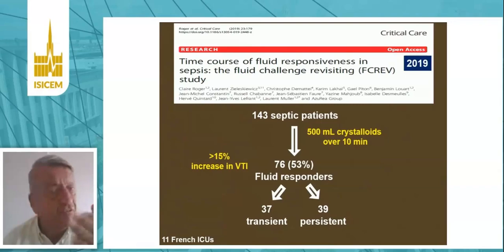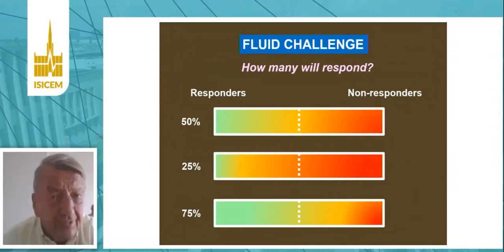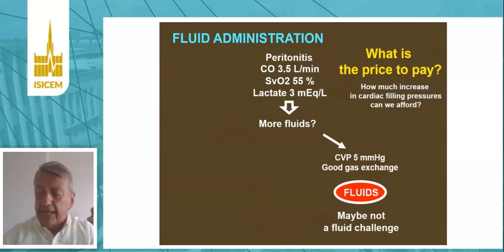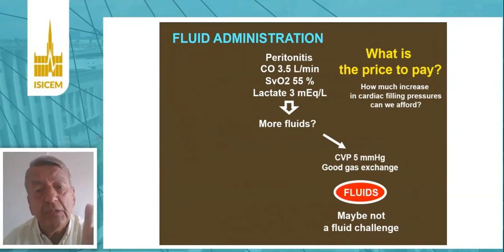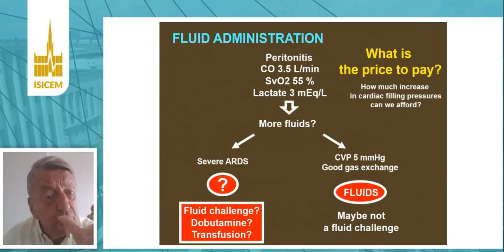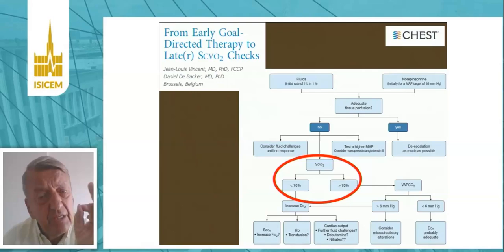How many patients will respond? It depends on your selection of patients. Optimally it may be about 50%, but sometimes it's less, sometimes more, depending on how you use it. We need to realize that there is a price to pay, which is the increase in filling pressures. If the patient has good lung function, you may not even need a fluid challenge if the central venous pressure is low, because the risk of edema is low. Whereas if it's severe ARDS, you may prefer to use dobutamine or a blood transfusion. ScvO2 is a very important variable to monitor, but that's another story.